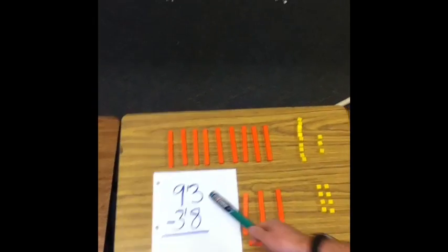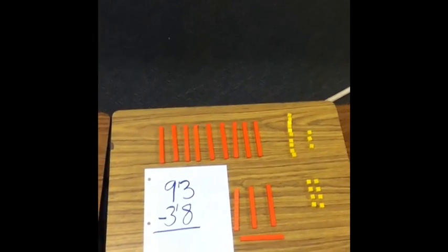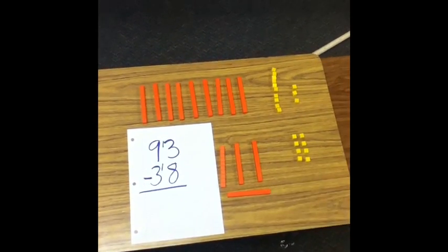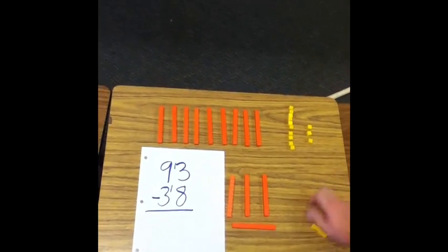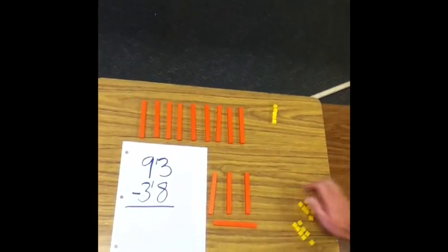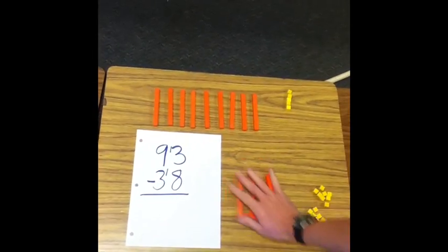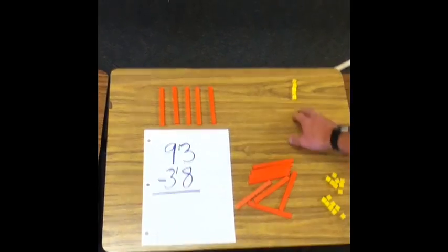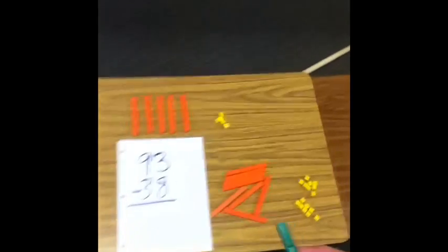So now I have 13 and I need to take away 8. So I take away 8 here and 8 here. And then I take away my 4 tens here and my 4 tens here. And it leaves me with 5 tens and 5 ones for my answer of 55.